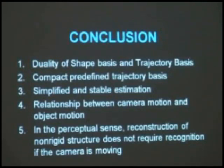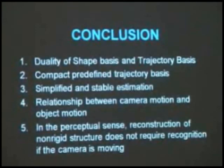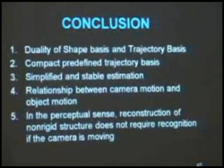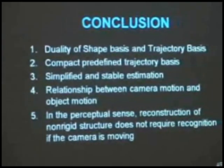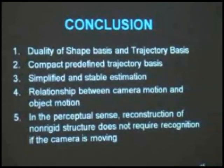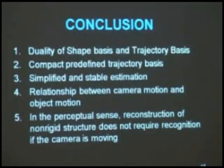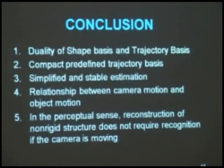An interesting subtle point: in the perceptual sense, Johansson's 1973 experiment showed that to reconstruct a structure in 3D in our mind, we have to recognize it first — I have to understand the dots I am seeing are human. What we have shown is counter to that: structure can be reconstructed without doing any recognition, if you impose smoothness constraints on trajectories through a limited K DCT basis. We are not saying humans do it without recognition — all we are saying is that in a machine it is possible to do it without recognition. The perceptual community is quite interested in this.